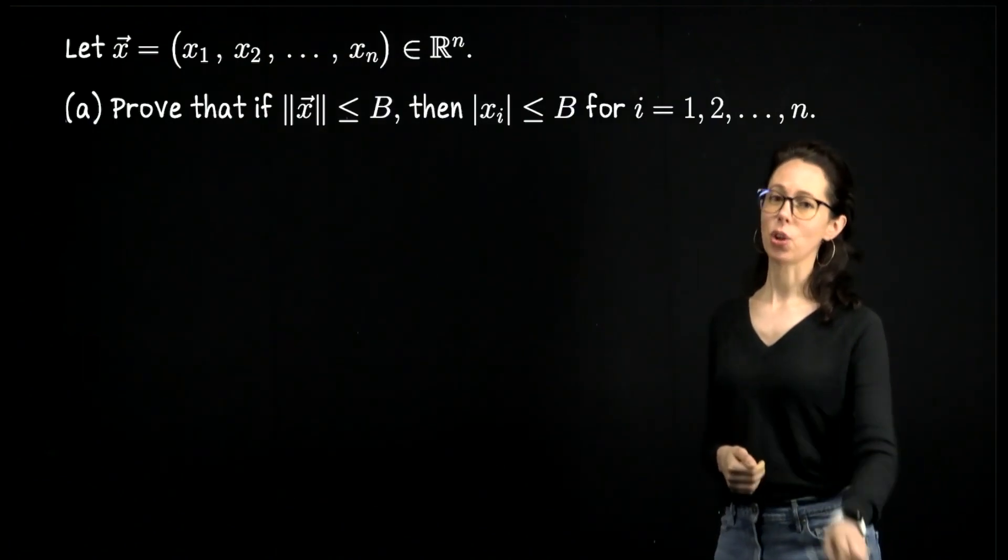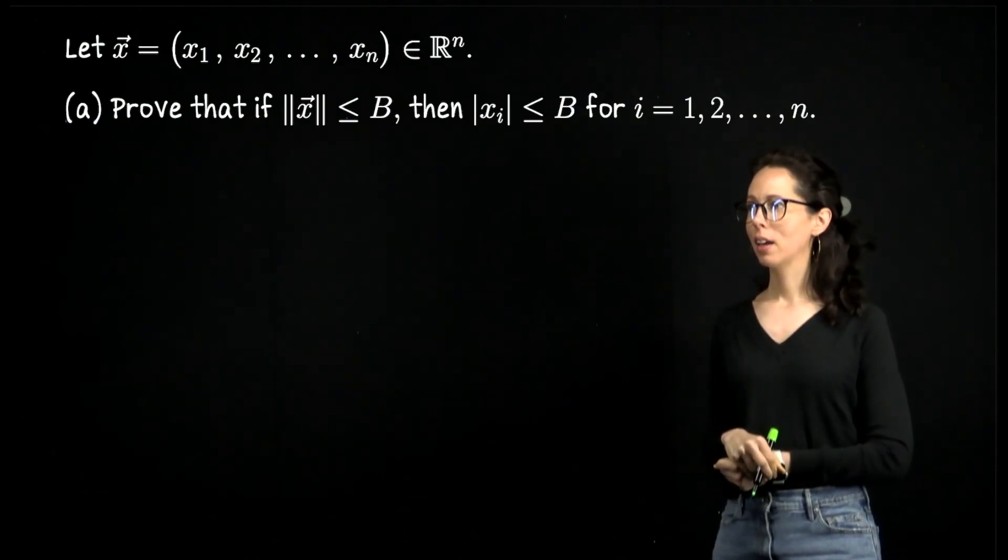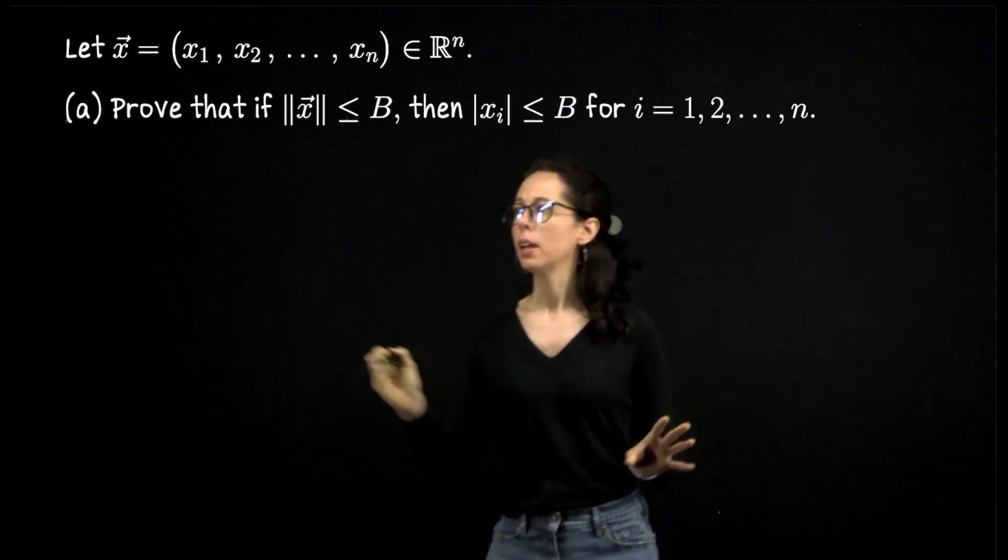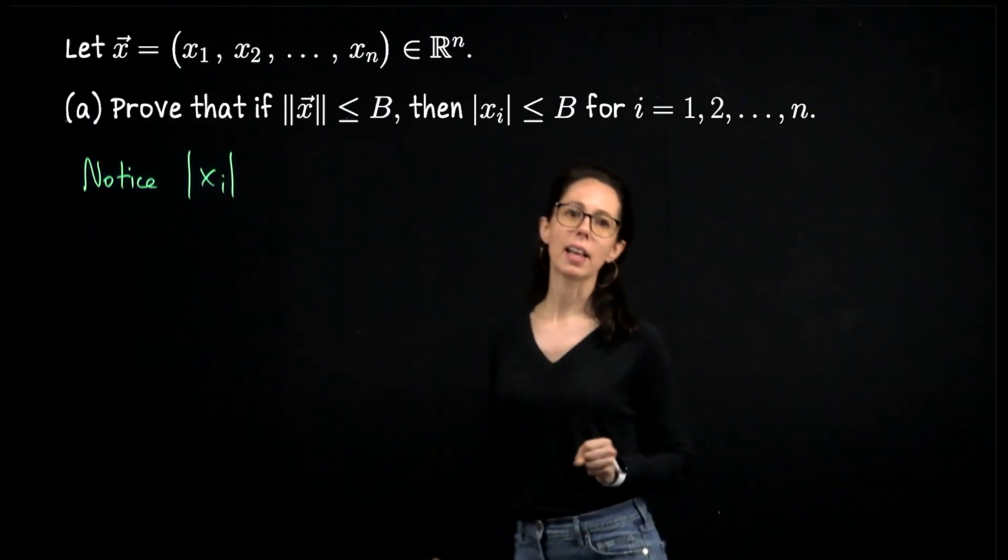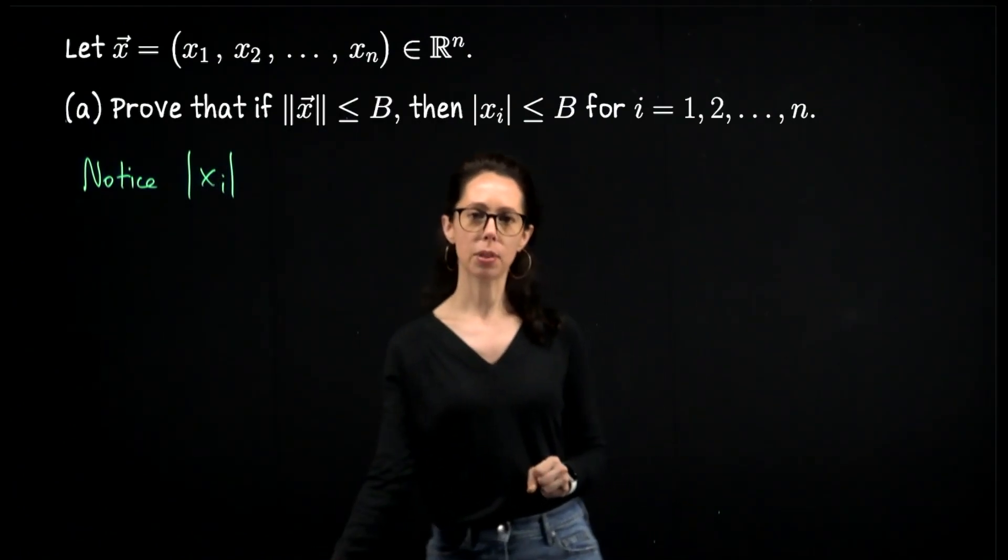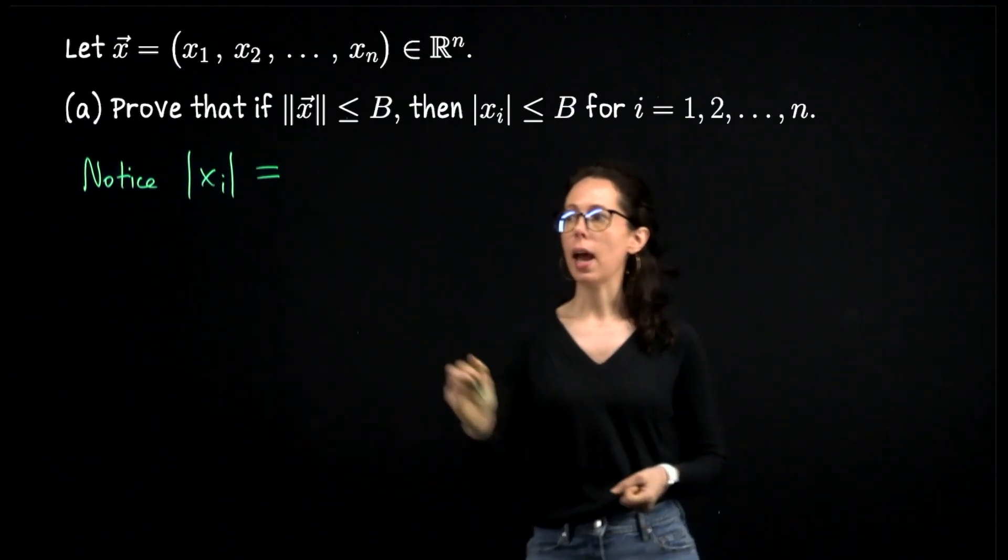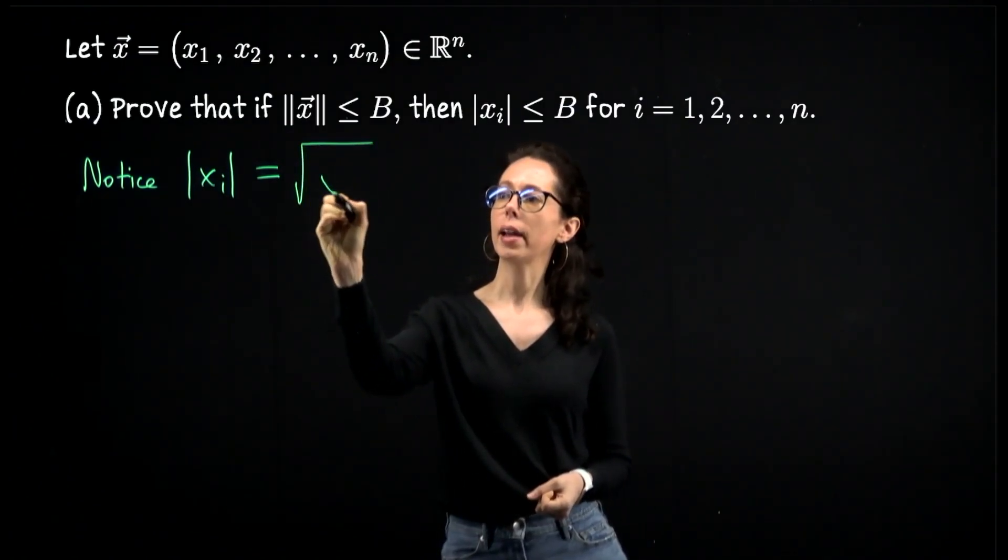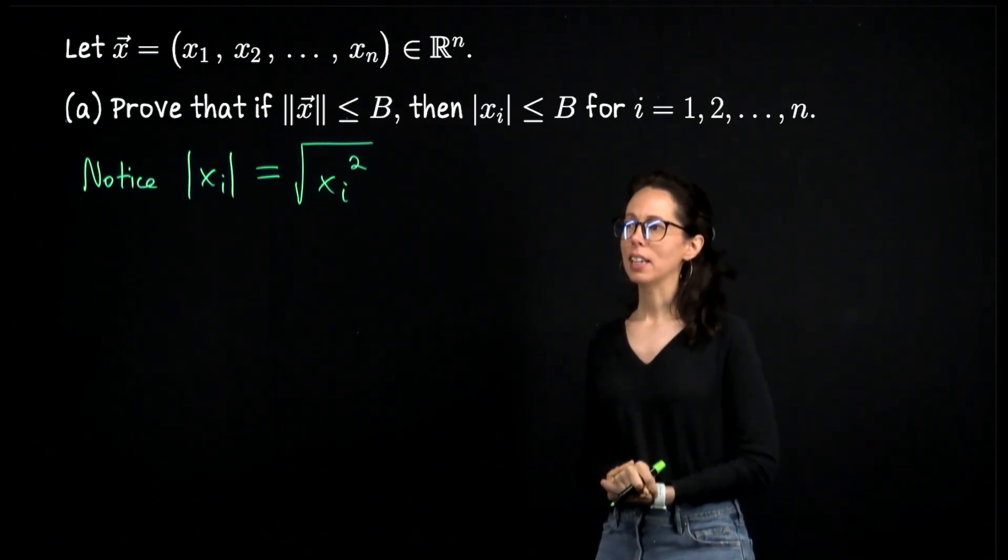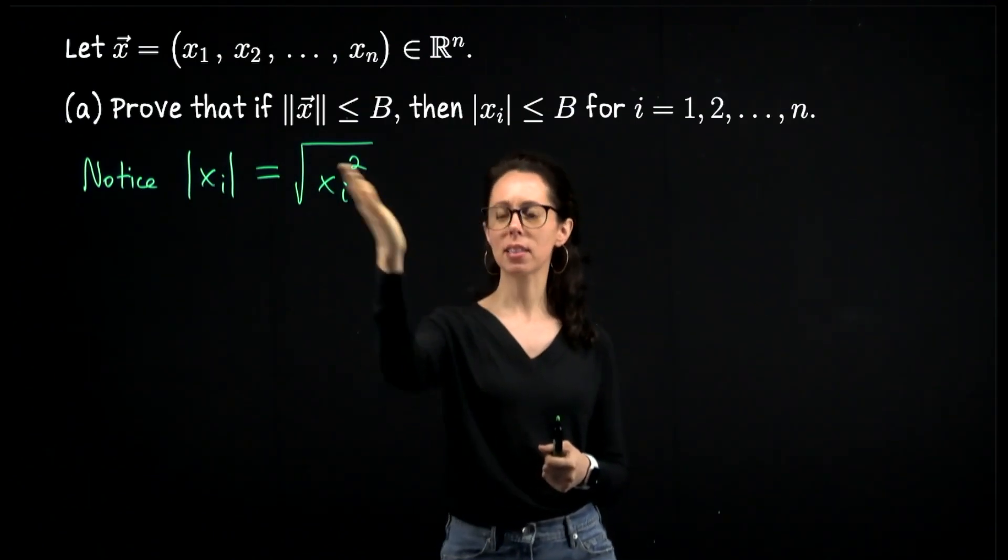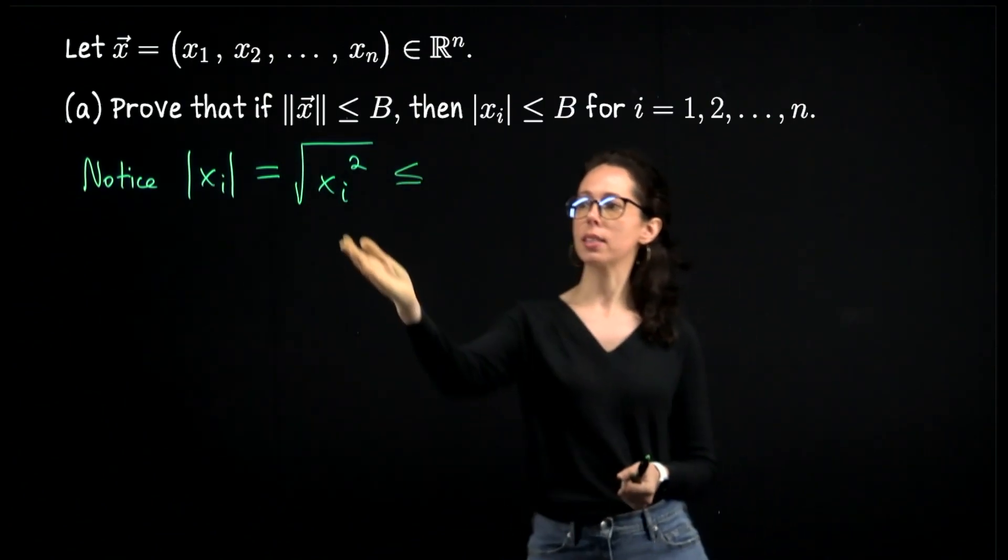So let's prove if the vector x is no larger than B, then each of the coordinates is no larger than B. All right, for this I want to point out something pretty cool. Notice, if I want to take the size of the ith coordinate, that's like saying what's the absolute value of x_i. Absolute value of a real number can always be written as the square root of that number squared. Okay, that's what I wanted to point out. That is just a nice useful thing to bring in here because this starts to look like part of the computation for the norm of x. In particular, if I add to this ith coordinate squared, the square of all of the other coordinates, we're adding a bunch of numbers which are non-negative. If anything, we go up in size.